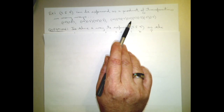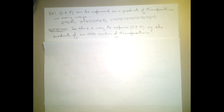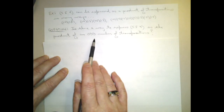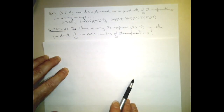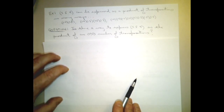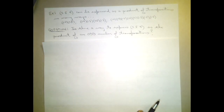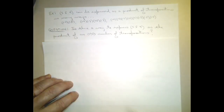That illustrates a potential pattern. I don't know if you noticed it or not, but all of those - 2, 4, and 8 transpositions - are all even numbers of transpositions. So (2, 5, 4) can be expressed, at least in three different ways, as a product of an even number of transpositions. Well, that begs a question: is there a way to express (2, 5, 4) as the product of an odd number of transpositions? Why don't you hit pause here and see if you can figure out a way?